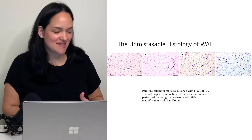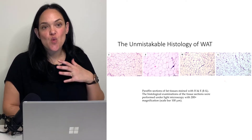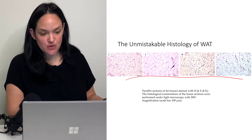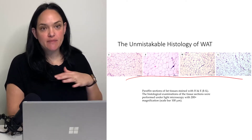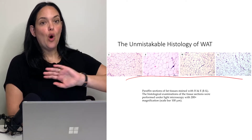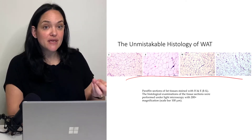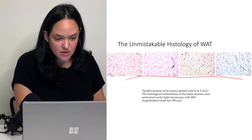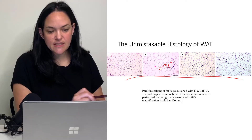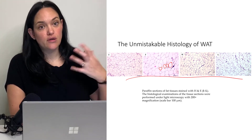Histologists tend to gloss over white adipose tissue as boring because of how it looks depending on the stain used — it appears as a bunch of empty cells under a microscope. That's because preparing slides involves a fat wash, which removes the lipids found within the large central vacuole of these white adipocytes. That large central vacuole is where the stored lipids are contained.